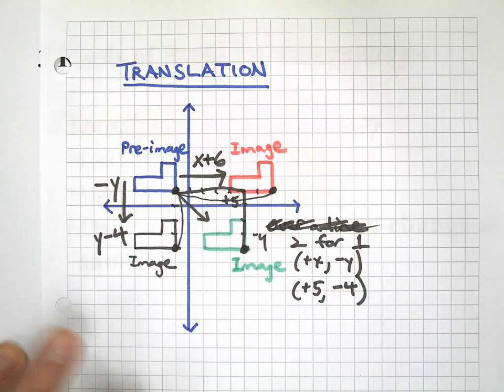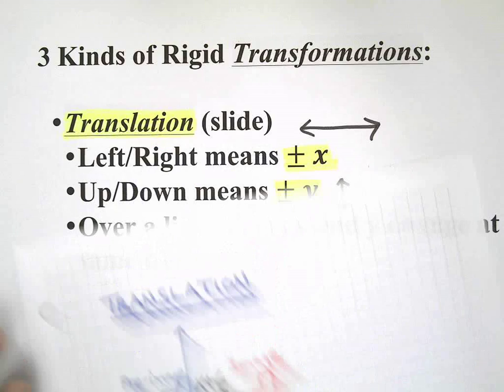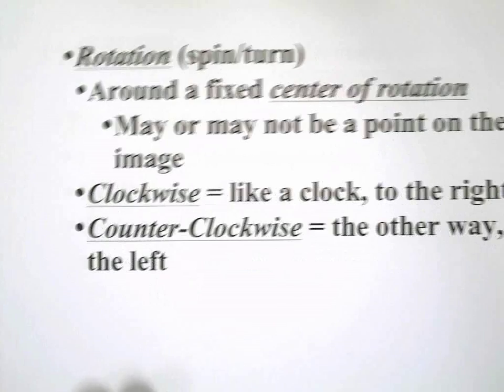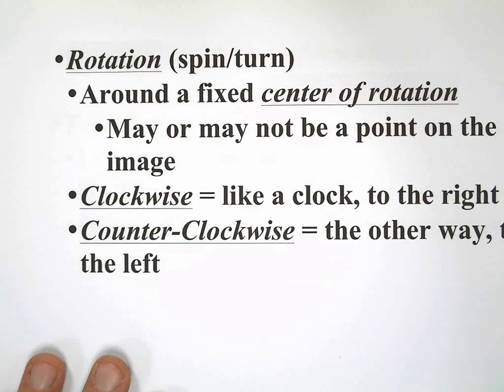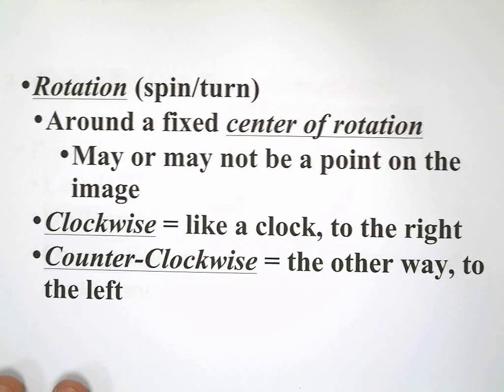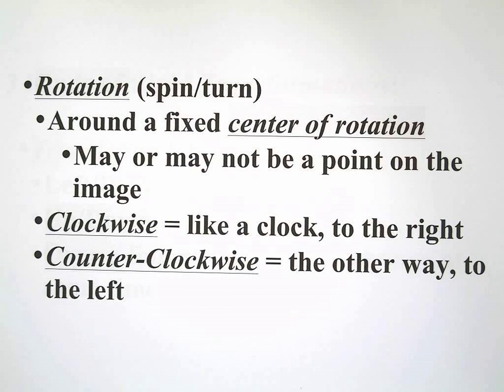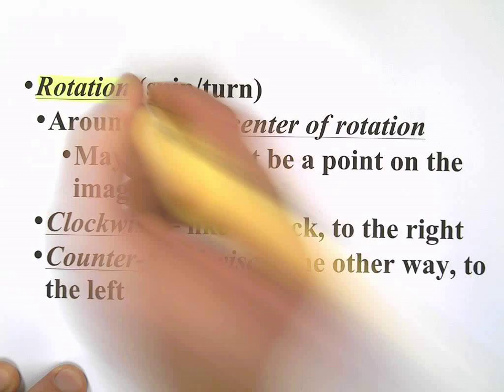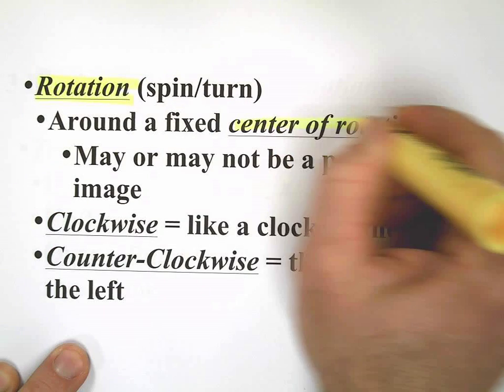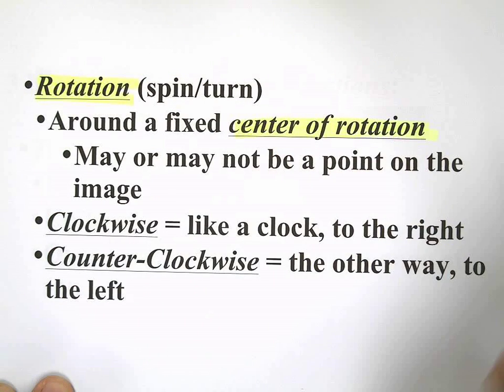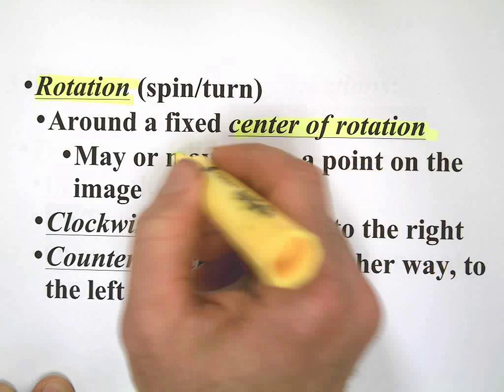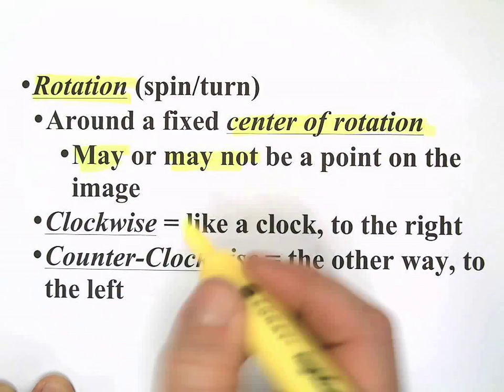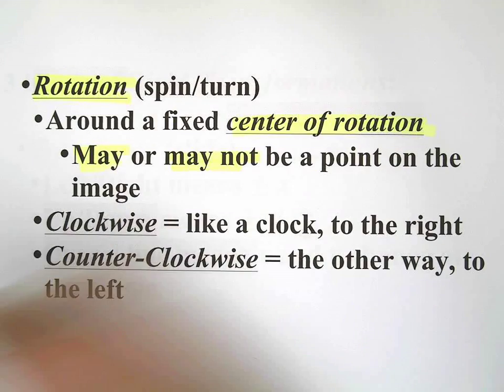Next, we've got rotations. This is when we spin or turn. Rotation. We use a fixed center of rotation, which may or may not be a point on the image. Here's what I mean.